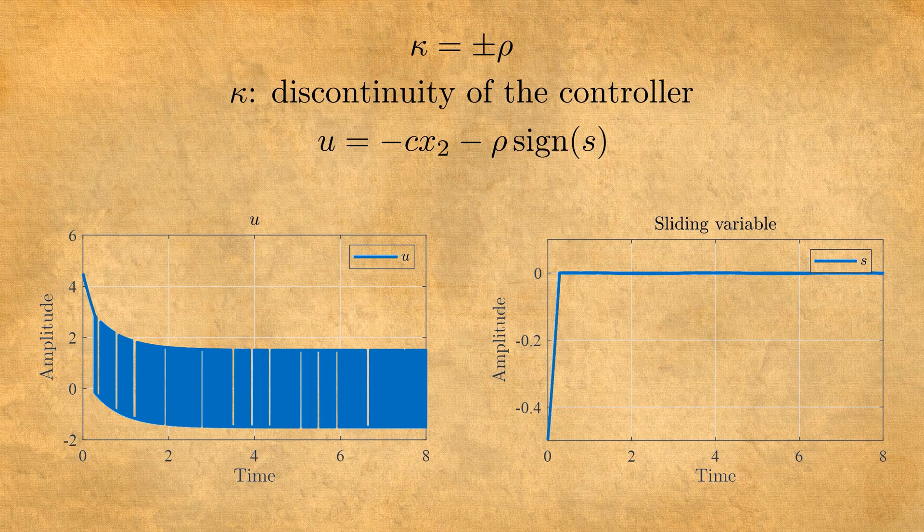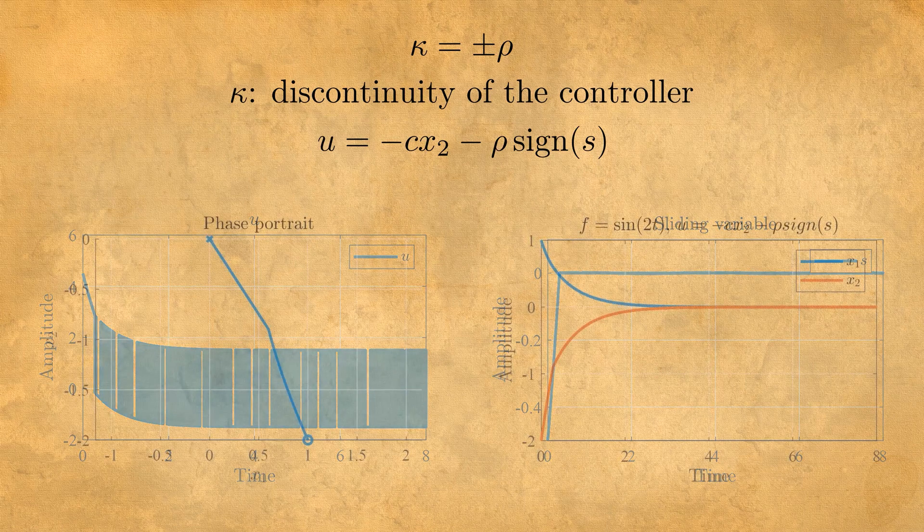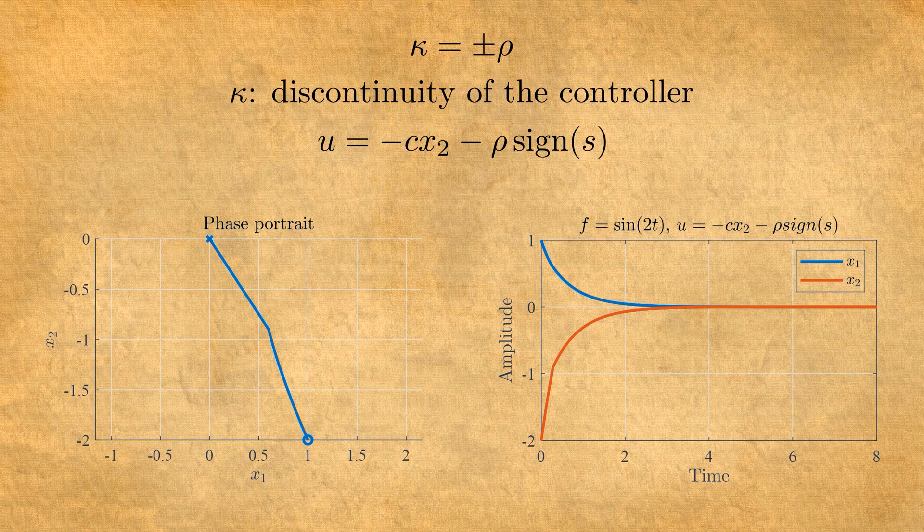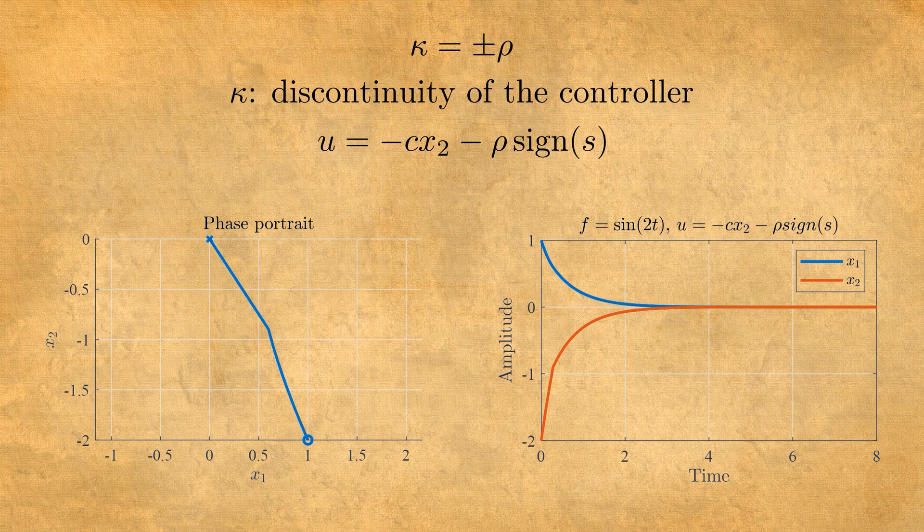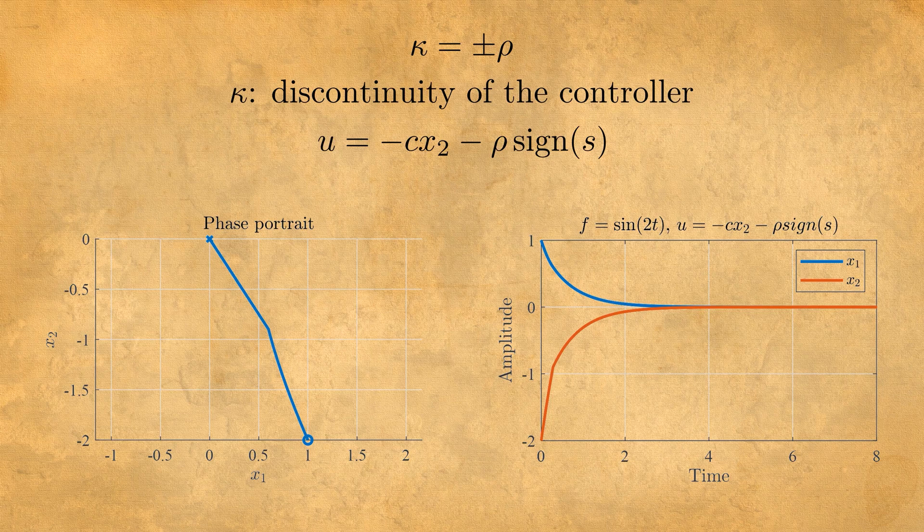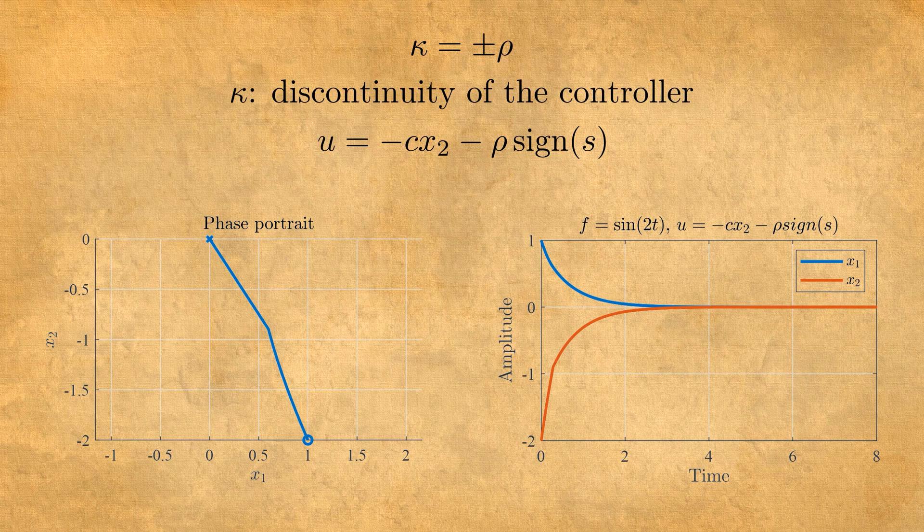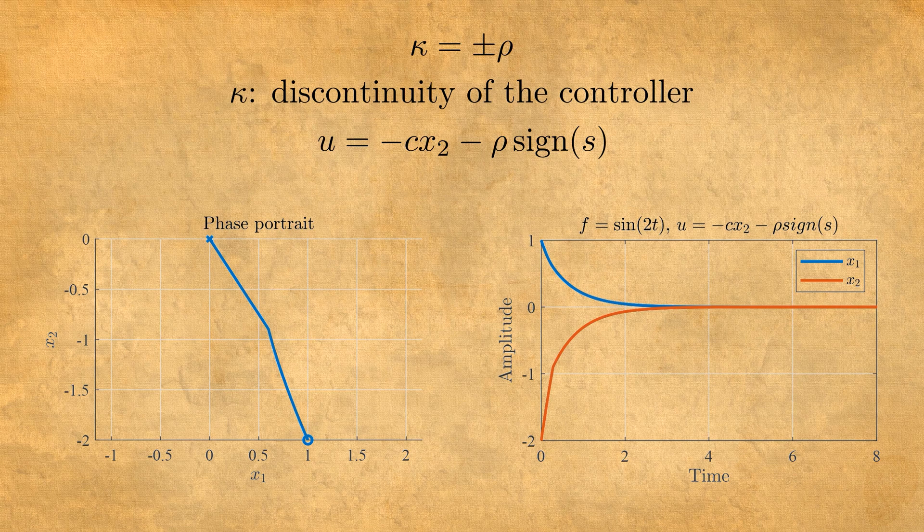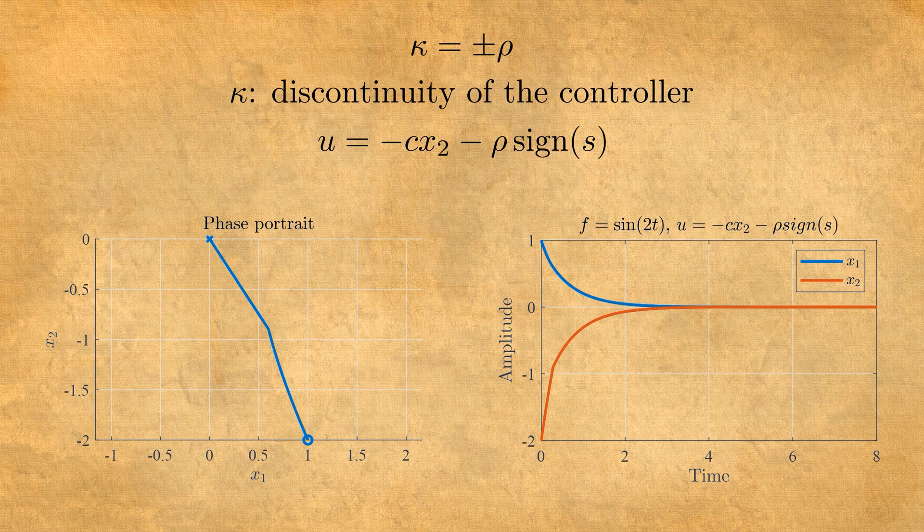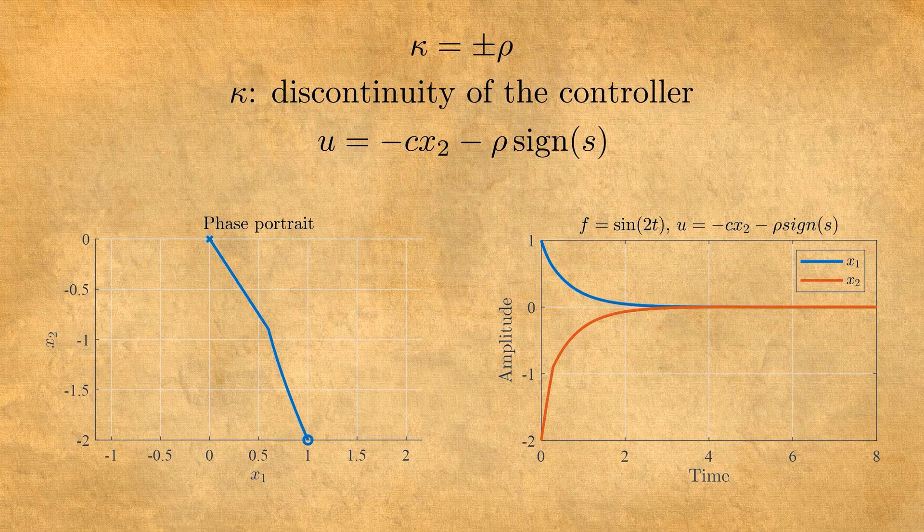Let's plot the phase portrait and the response of our two states to see if we're correct. So on the phase portrait as we see it starts at the point one minus 2. And you can see the point reaches the line which would be x2 equals minus cx1. And both our states are now stabilized.